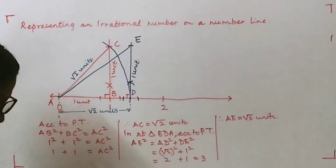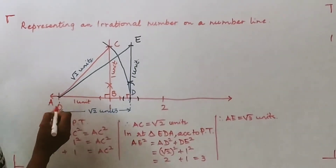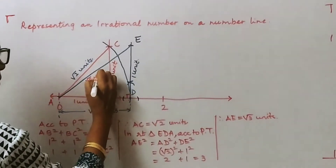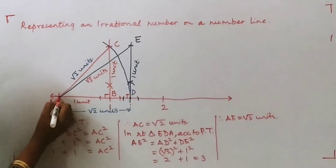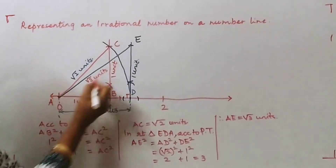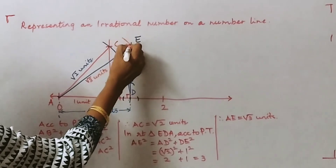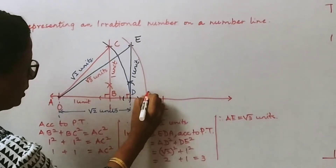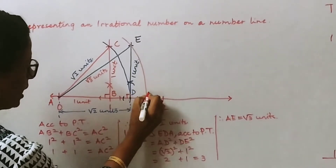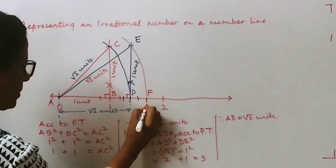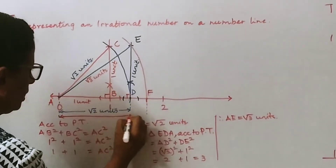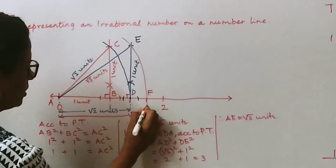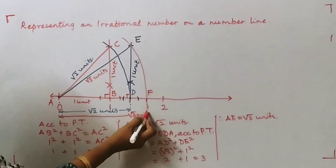To mark √3 on the number line, we take the radius from A to E, which is √3 units. We place the point of the compass at A, stretch it up to E, and draw the arc. This point we call F. So from A to F gives us √3 units.